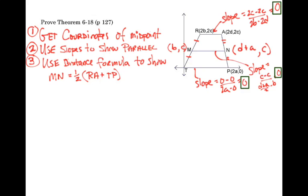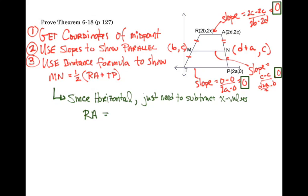The next piece is the distance formula. Since things are horizontal, we just subtract the x values. Since there's no change in y, it's only a change in x. So our distance for RA becomes 2d minus 2b.